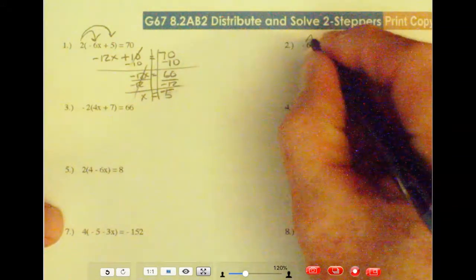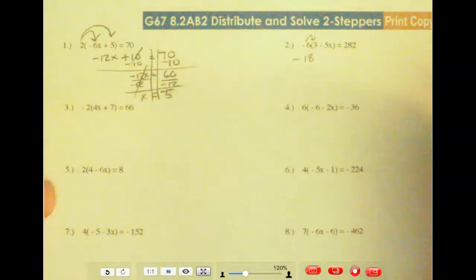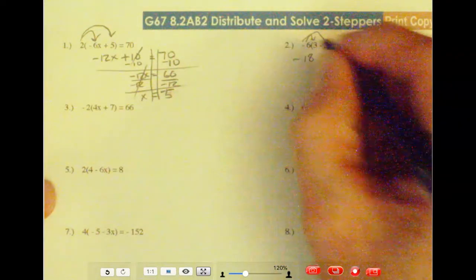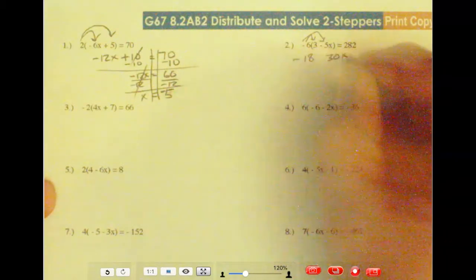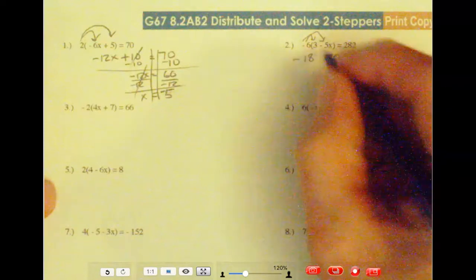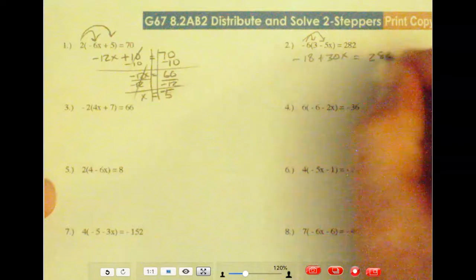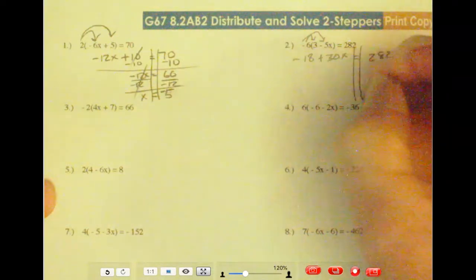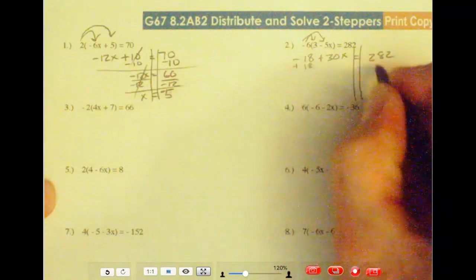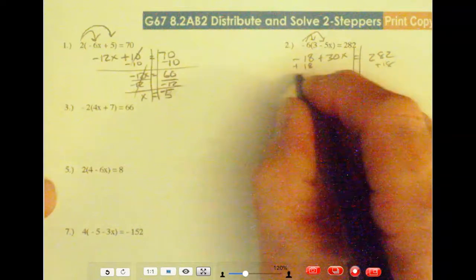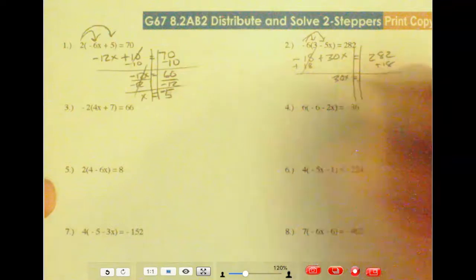Okay, let's distribute here. 6 times 3 is 18. That's a negative 18, because there's one negative symbol. 6 times 5, that's going to be 30x. And it's going to be a positive, because it's a negative times a negative. And that equals 282. Let me get my two-steppers bracket set up here. So let's add 18 to both sides. Those cross off. Now you have 30x equals 300.